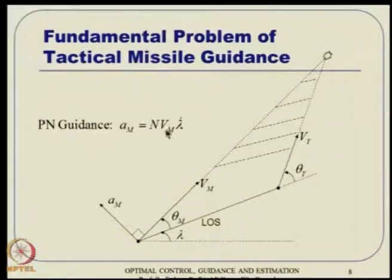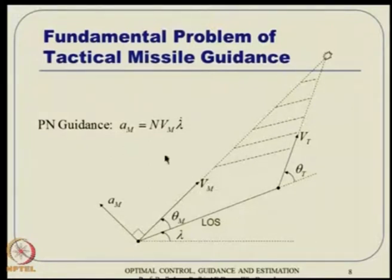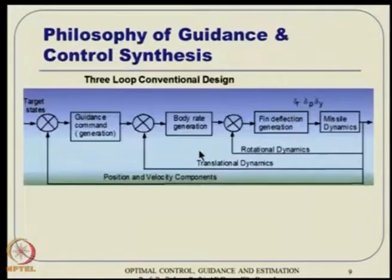This is a summary in a conventional sense. Once you generate A_M and extend to 3D, one component is in the z-direction and another in the y-direction. In the x-direction — the velocity vector direction — typically you do not have a control action. So we have to live with that, and the engagement is ensured based on time-to-go information. Once you generate this lateral acceleration, that is the guidance command generation part.